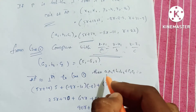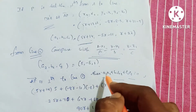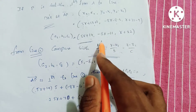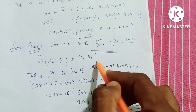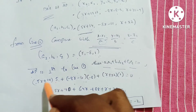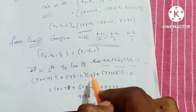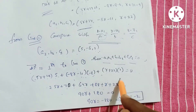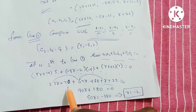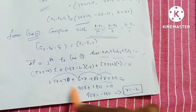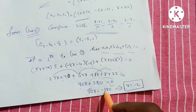Applying the perpendicularity condition: (5R plus 14) times 5 plus (minus 8R minus 11) times (minus 8) plus (R plus 22) times 1 equals 0. Expanding: 25R plus 70 plus 64R plus 88 plus R plus 22 equals 0. Combining: 90R plus 180 equals 0, so R equals minus 2.